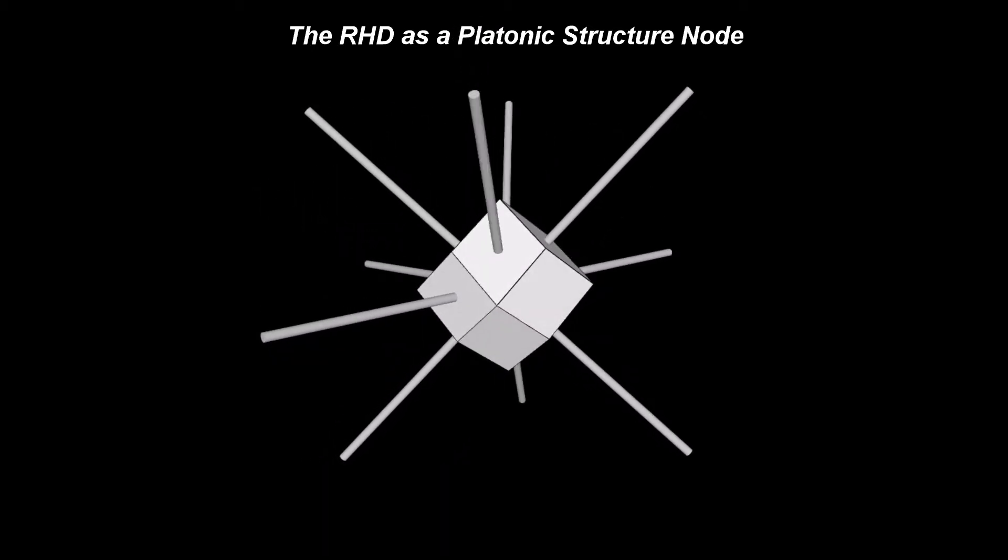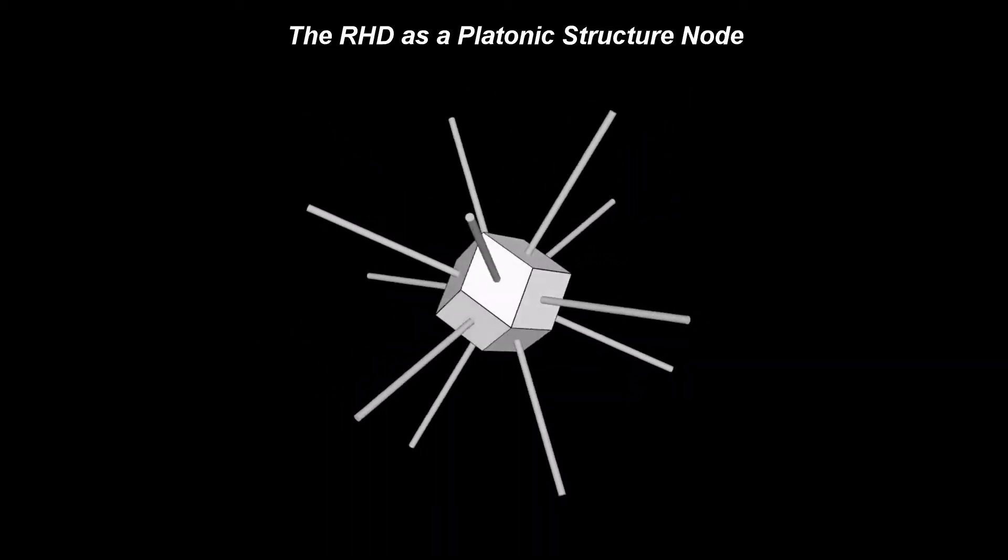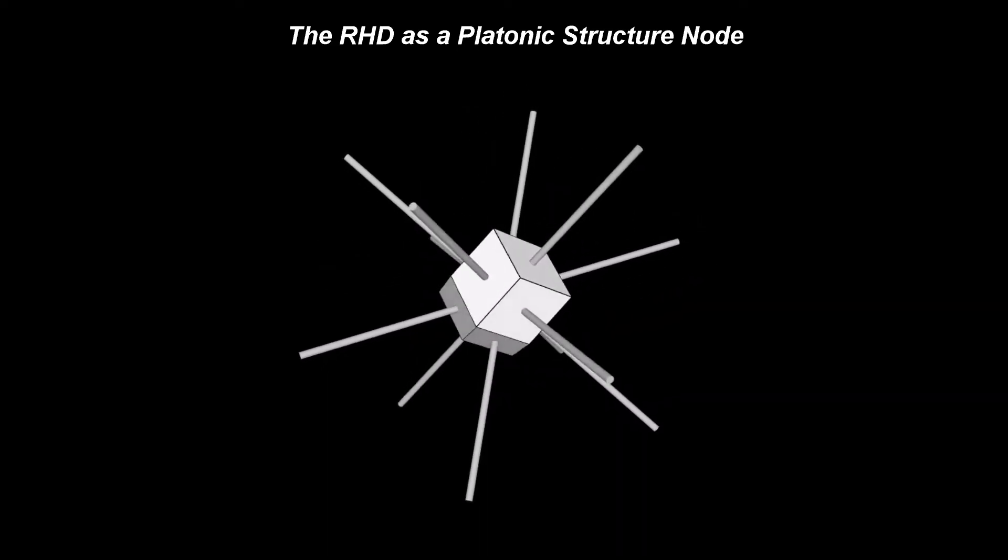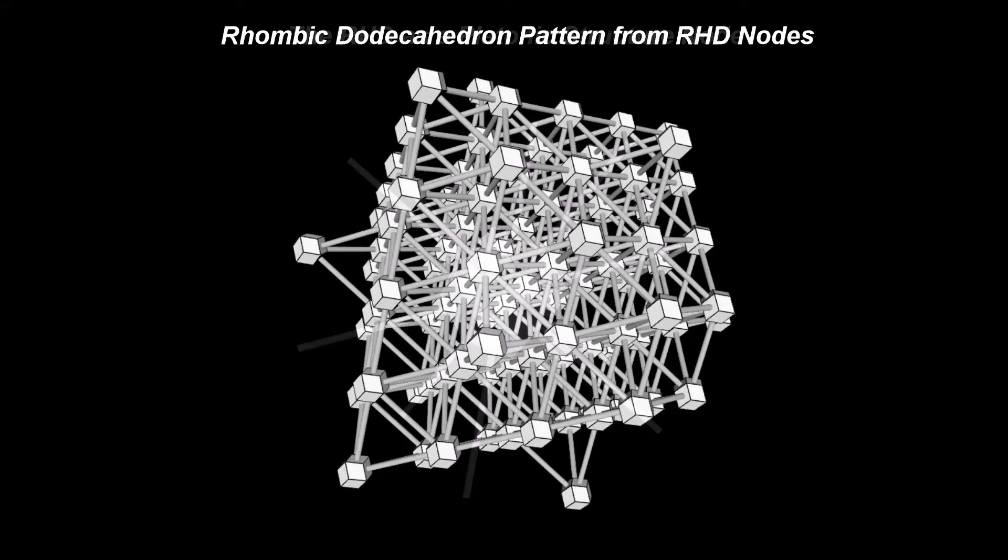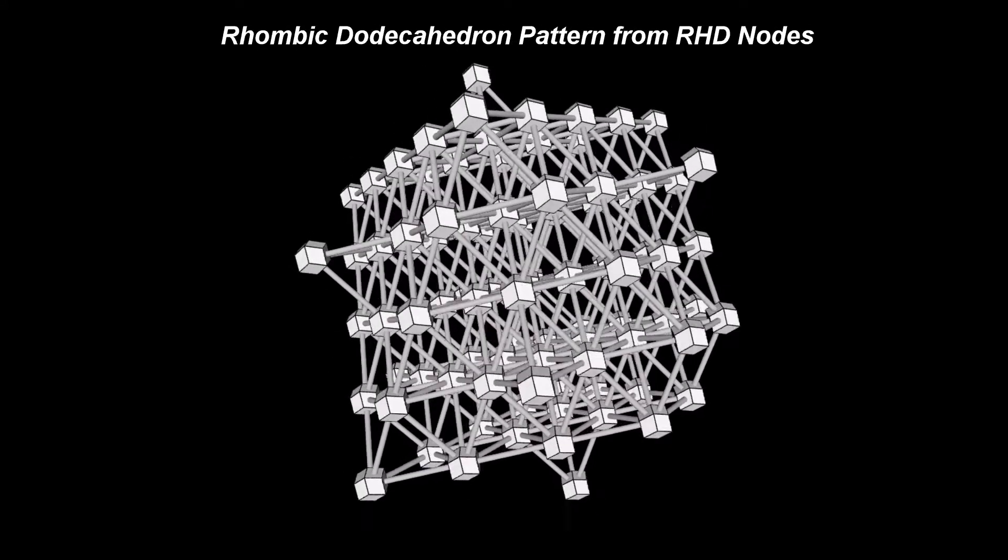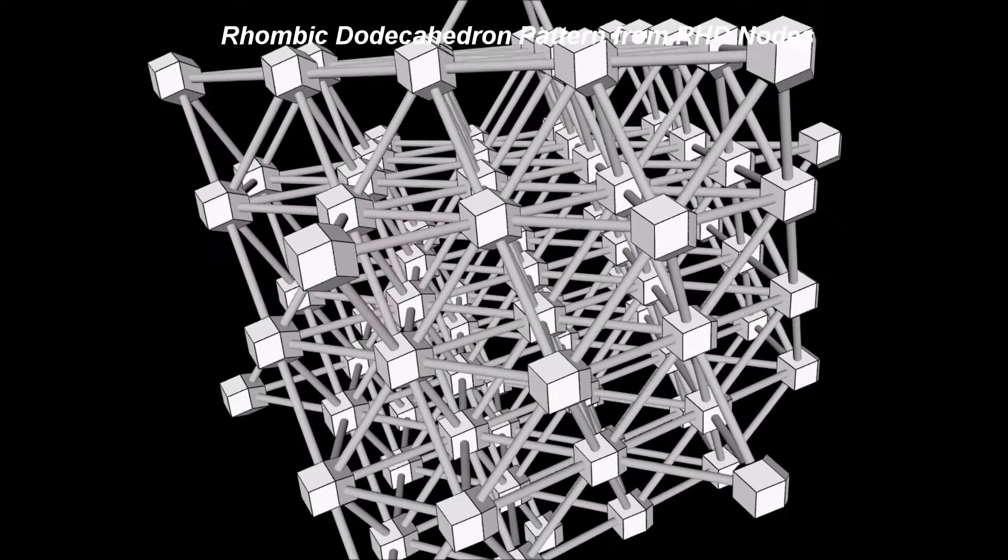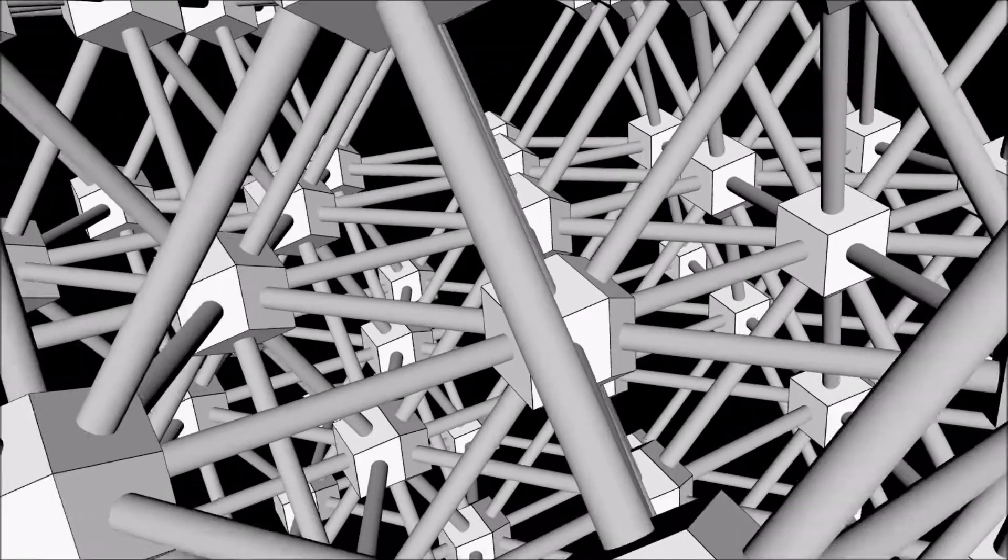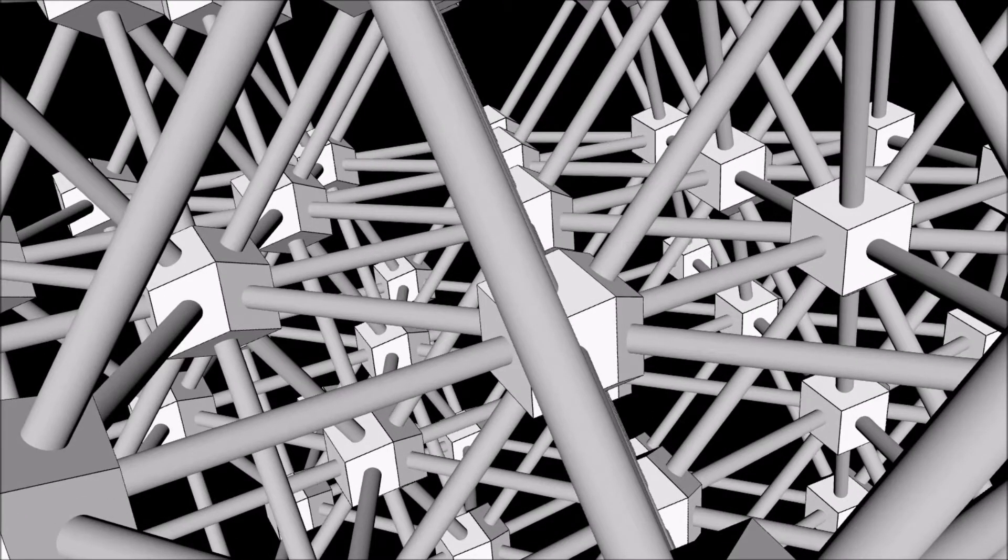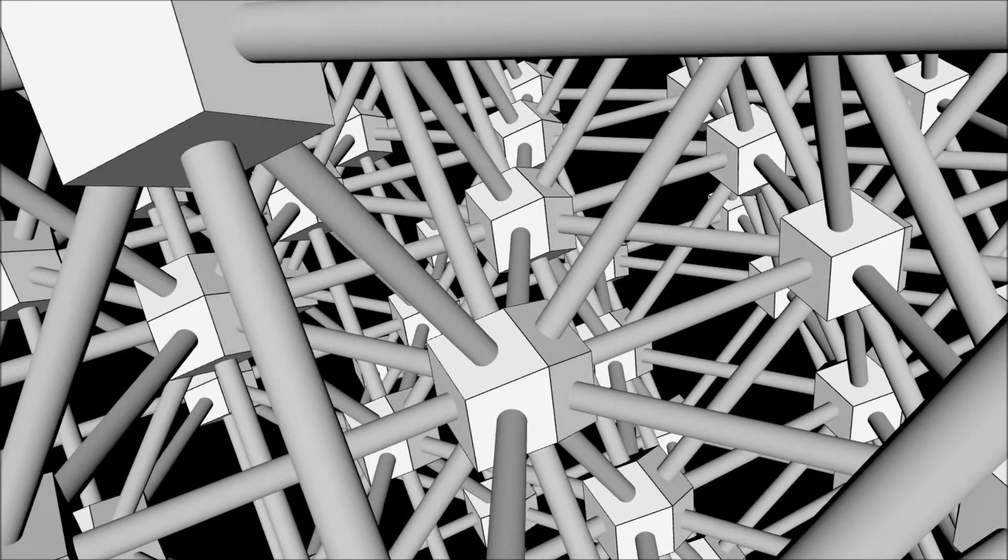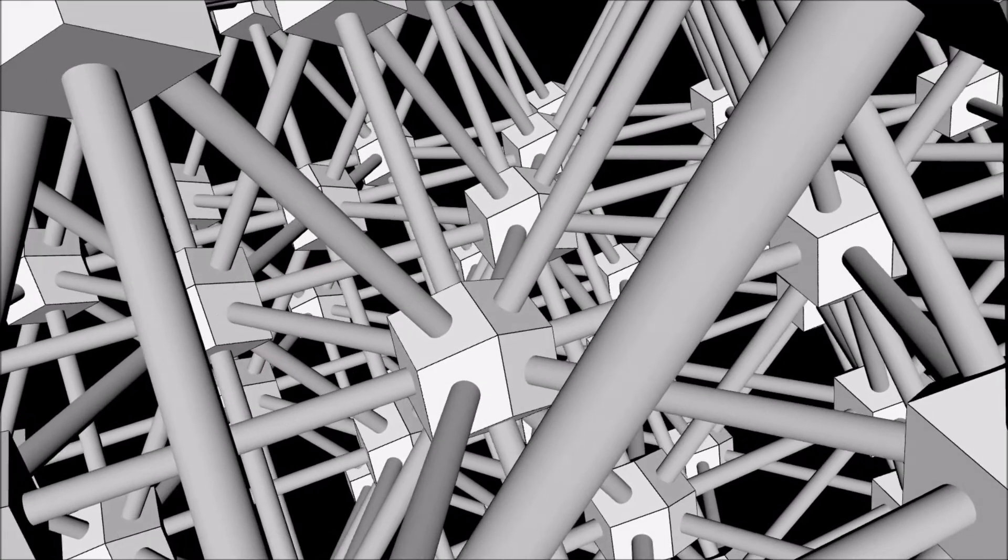This video does not look at the rhombic dodecahedron as the shape of the platonic structure's nodes. It rather looks to the rhombic dodecahedron as a pattern formed from multitude of nodes in CPS. The double use and appearance of the rhombic dodecahedron in CPS provides a possible explanation to fractals, as I will explain in a future video.